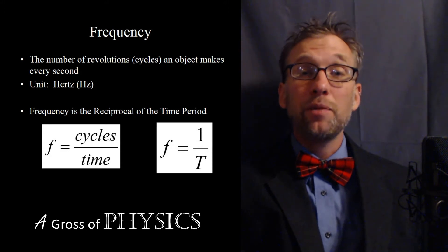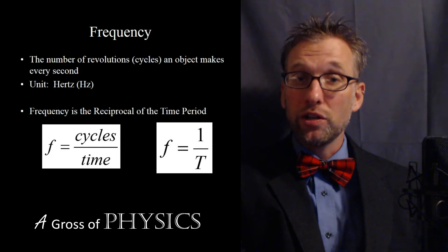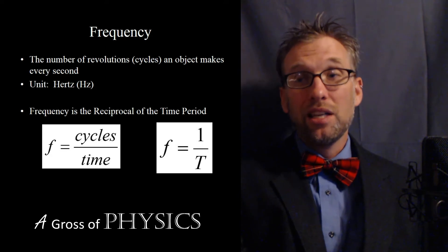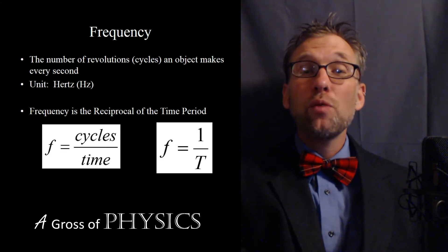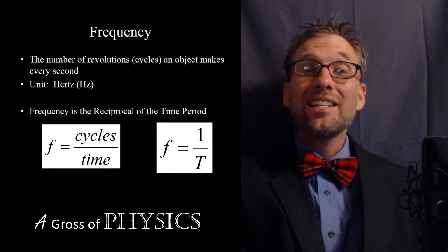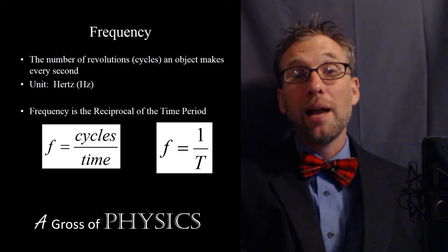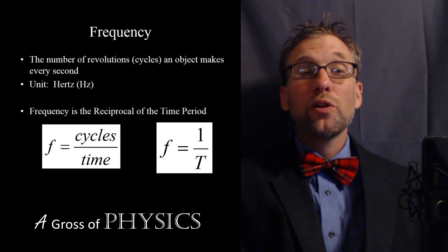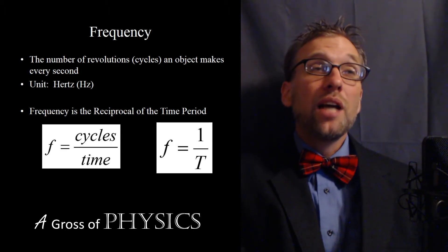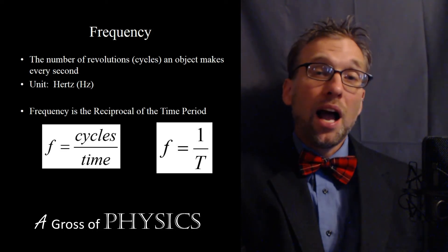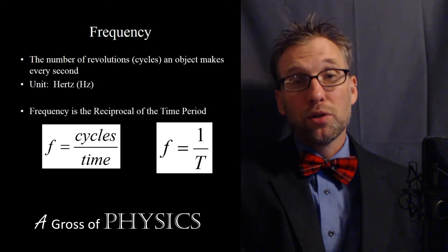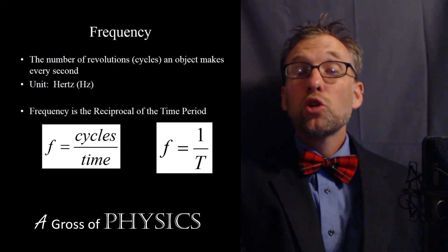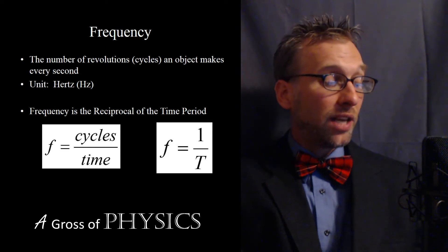To differentiate between a traditional time and the time period for circular motion, we use a capital T. Capital T represents the time it takes to make one full oscillation. Problems may give you a total time with multiple trips around the circle, so you'll need to find the time for one trip — you may have to simplify that first to get the time period.